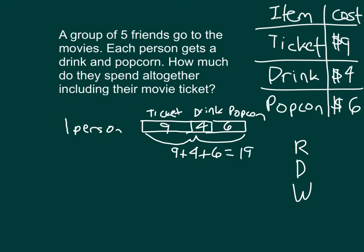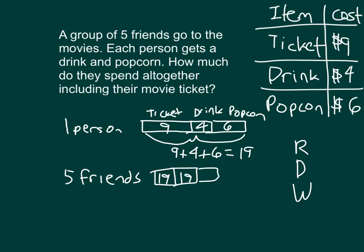So that is one person — they spend $19. But it says how much do they spend all together, so there's five friends. If we have 19, we have 19 put together how many times? We're drawing that picture to represent that expression — that expression of 19 times 5.